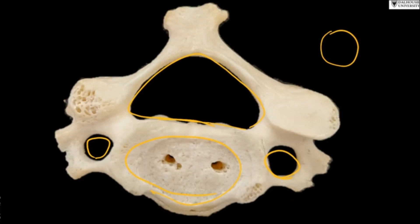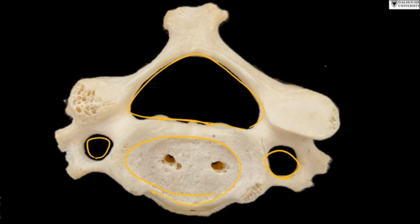Like the thoracic and lumbar vertebrae — in the thoracic vertebrae, the body has a heart-shaped form, but in the cervical vertebra this one is transversely oval. The striking feature is the presence of the foramen transversarium.